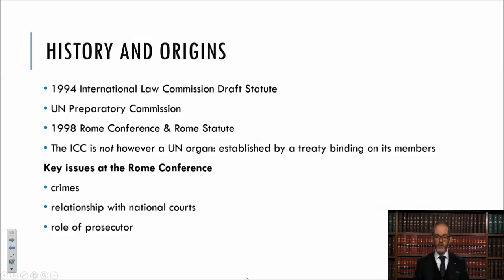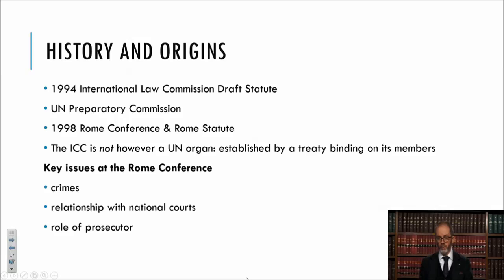Then there was the question of the role of the prosecutor. Should there be a completely independent prosecutor? Or should the prosecutor only be able to act with the supervision of, for example, the UN Security Council, or organs of the court itself such as a trial chamber? A particular concern here from the United States — perhaps more strongly than any other state party to the negotiations — was the possibility of a politically motivated or rogue prosecutor who would bring ideologically motivated prosecutions against nationals of particular states.